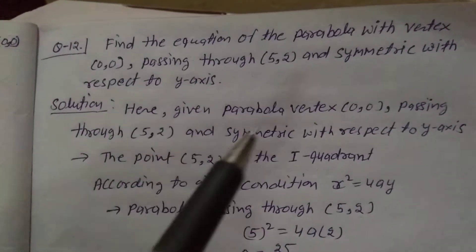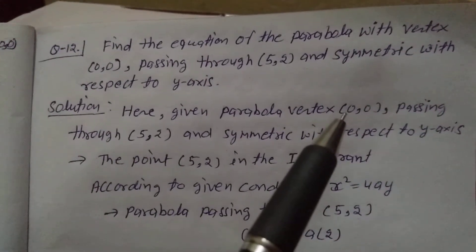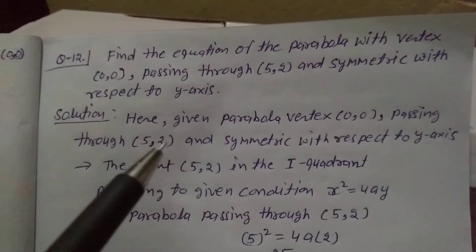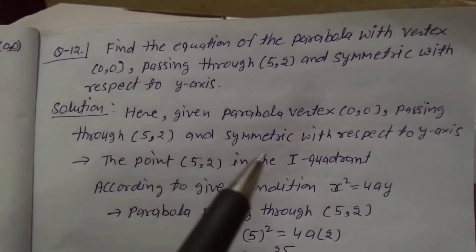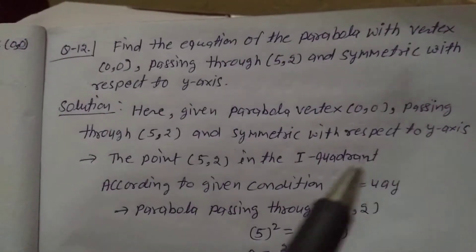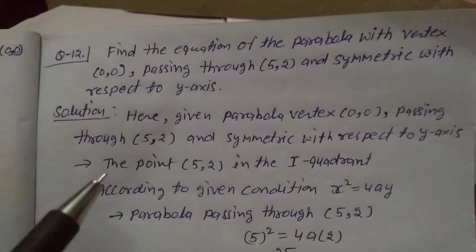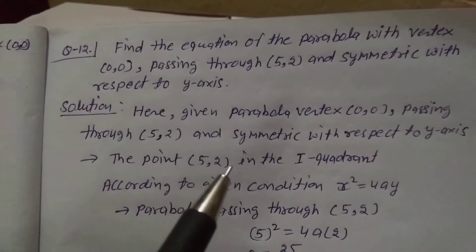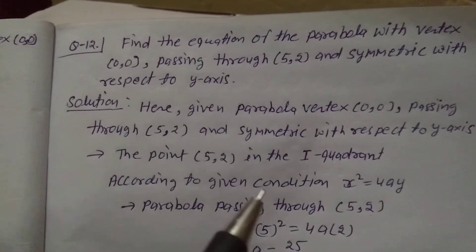Solution: Here, given parabola vertex (0,0), passing through (5,2), and symmetric with respect to y-axis. The point (5,2) is in the first quadrant according to the given condition.